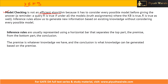Model checking is not an efficient algorithm because it has to consider every possible model before giving the answer. In the last lecture, a query R is true if under all the models where KB is true, R is true as well. Inference rules allow us to generate new information based on existing knowledge without considering every possible model — that is what inference rules are.